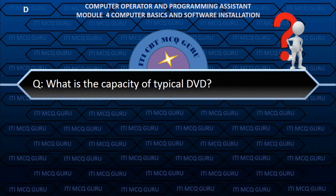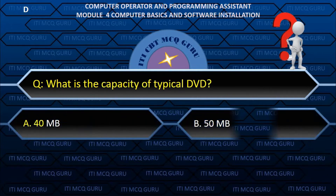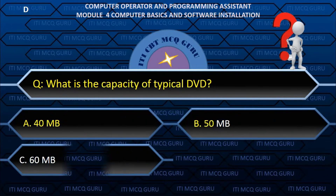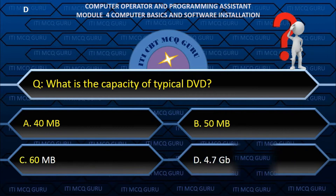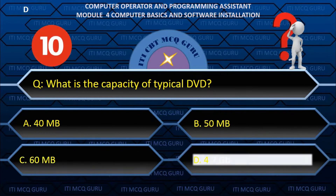What is the capacity of a typical DVD? — D. 4.7 GB.